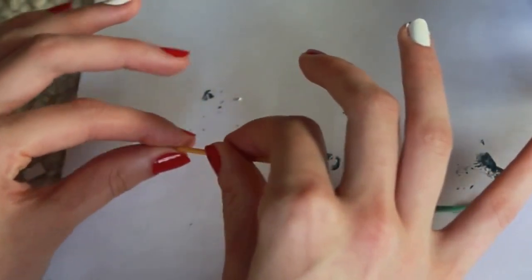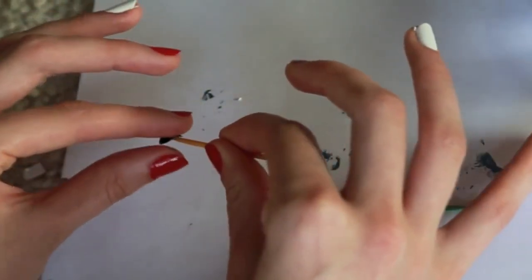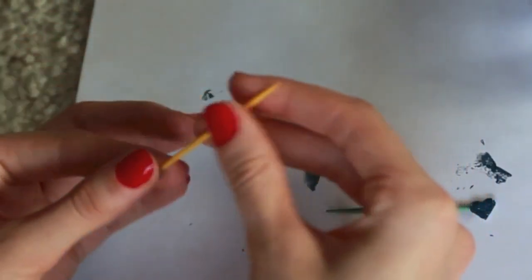Once they're dry, you want to kind of bend them a little bit, just so that they'll fit the curve of your nail and won't pop up and lift off.